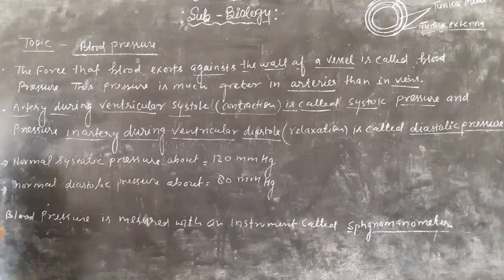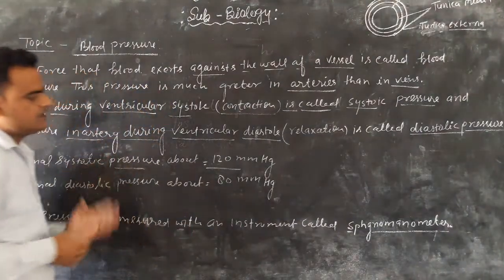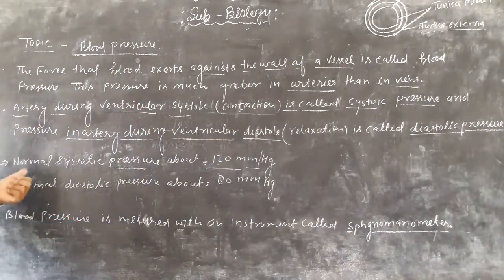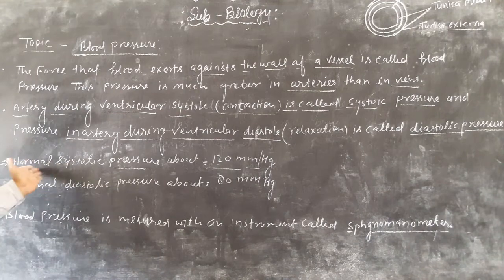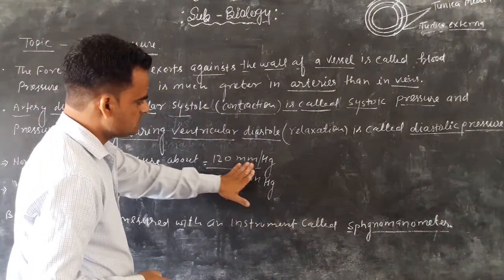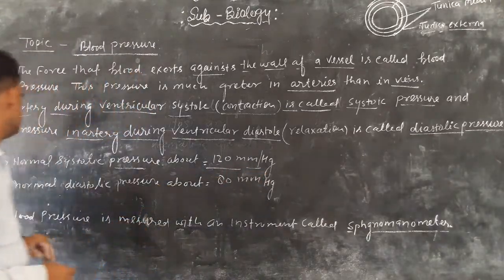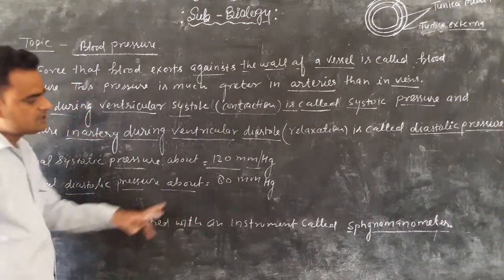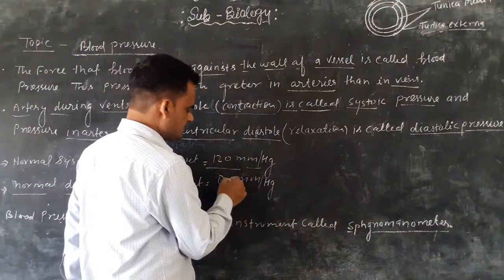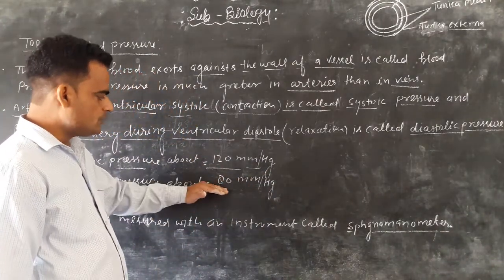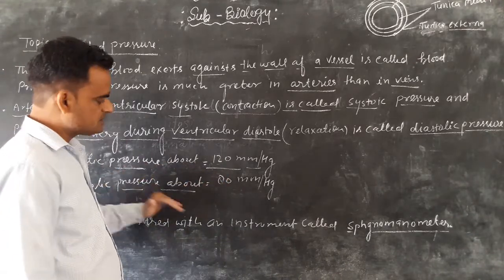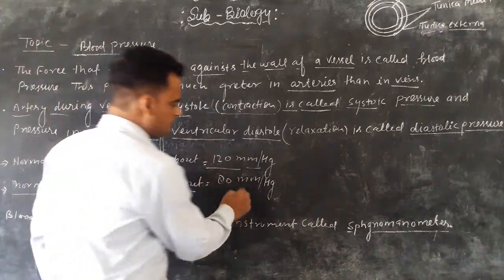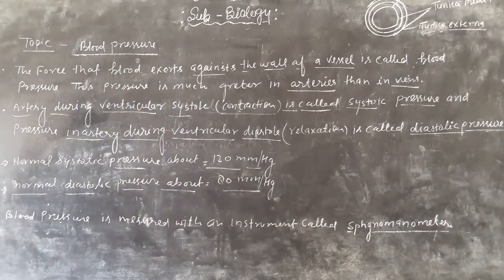Construction is called systolic pressure and relaxation of the heart is called diastolic pressure. The normal systolic pressure is about 120 mmHg, which is the highest blood pressure. The normal diastolic pressure is 80 mmHg, which is the lowest. So 120 mmHg is the normal systolic pressure and 80 mmHg is the normal diastolic pressure.